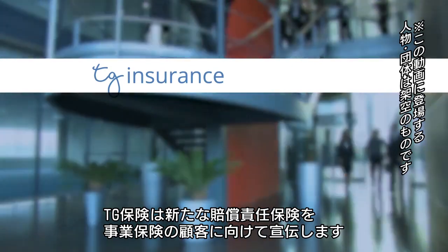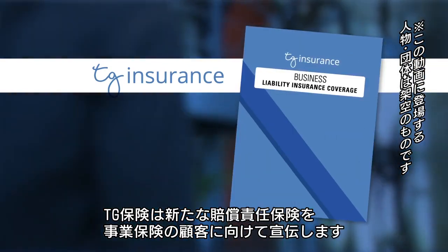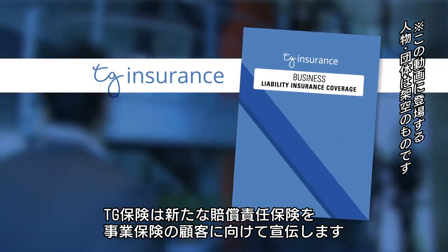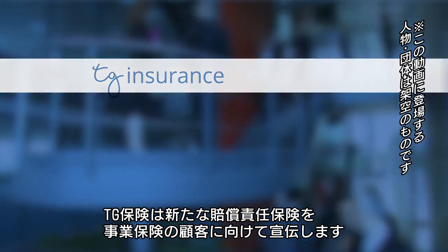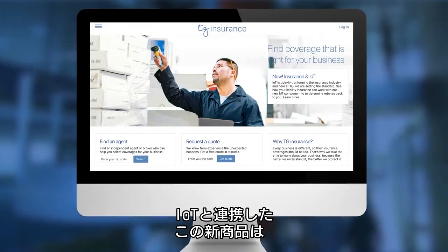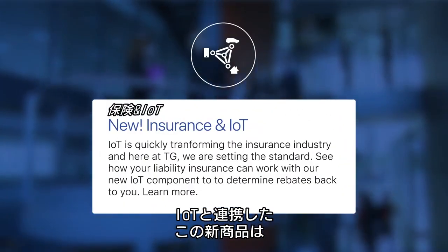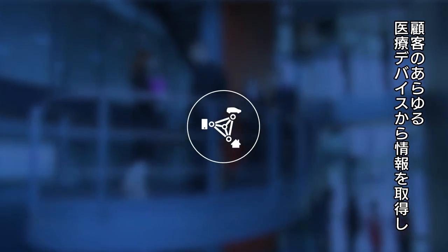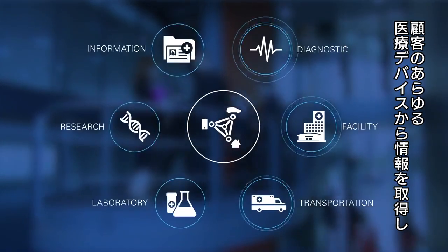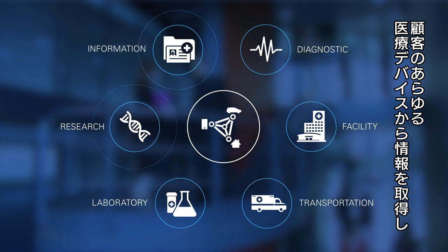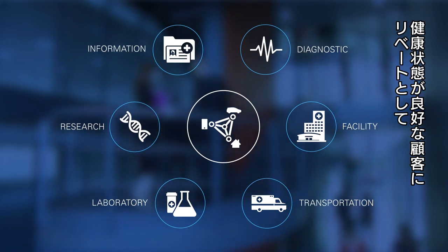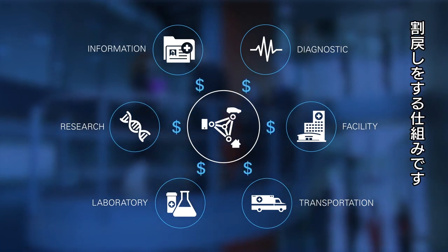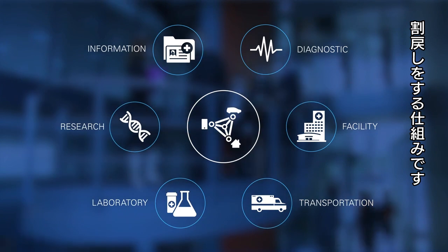TG Insurance has a new liability insurance product that they would like to promote to their business insurance customers. This new product has an IoT component that allows TG to receive signals from their customers' medical devices. Devices in good standing will trigger a rebate back to the customer.